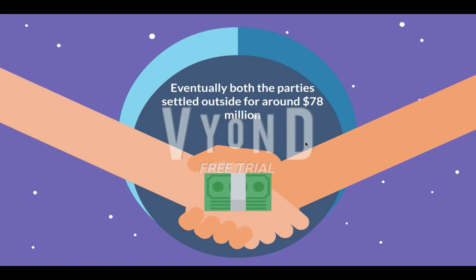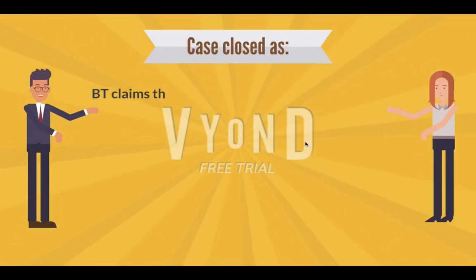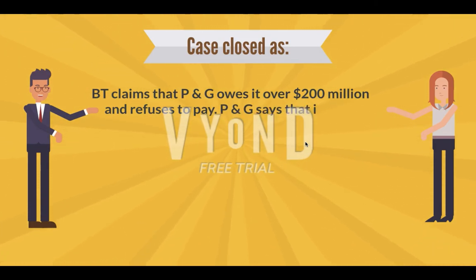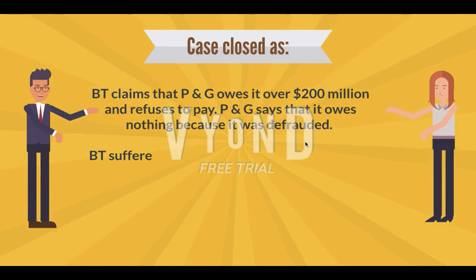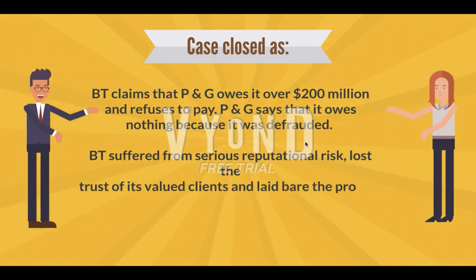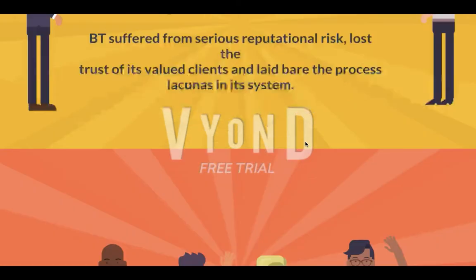Eventually both parties settled outside court for around 78 million dollars. BT had claimed that P&G owed it over 200 million dollars, while P&G said it owed nothing because it had been defrauded. BT suffered serious reputational risk, lost the trust of its valued clients, and the case laid bare the process lacunas in its system.